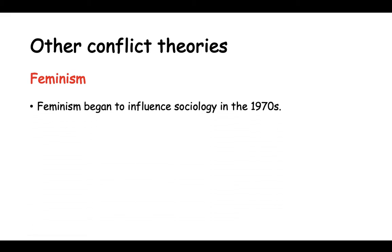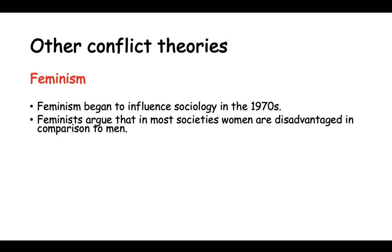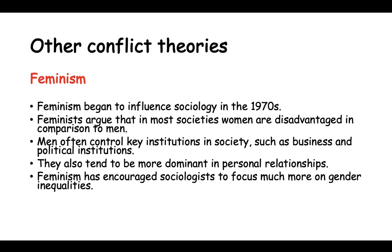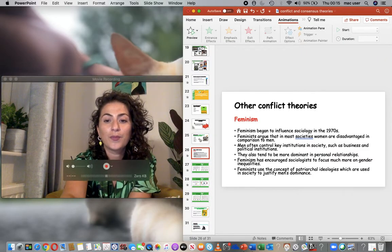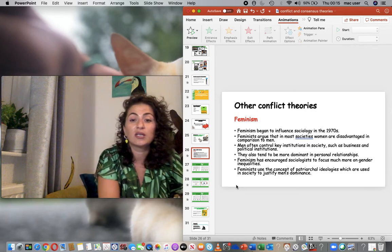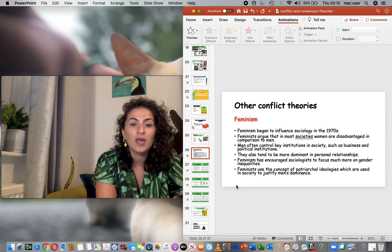Feminism began to influence sociology in the 1970s - which is surprisingly late. Feminists argue that in most societies women are disadvantaged in comparison to men. Men often control key institutions in society such as business and political institutions, and they also tend to be more dominant in personal relationships. Feminism has encouraged sociologists to focus much more on gender inequalities. Feminists use the concept of patriarchal ideologies, which are used to justify men's dominance in society.